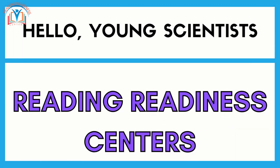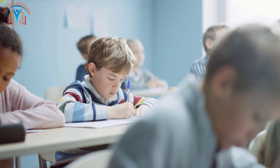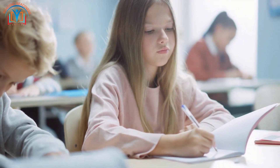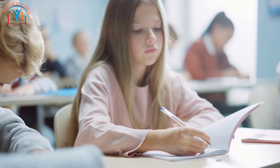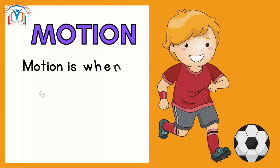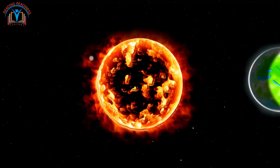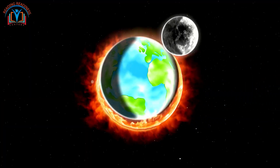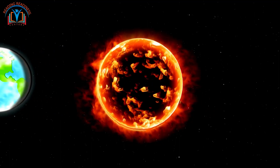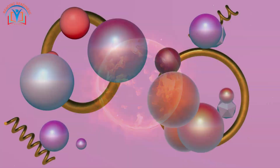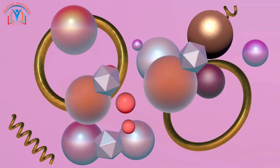Hello young scientists, welcome back to Reading Redness Centers, where learning is an adventure. Today we are diving into an exciting topic: motion and its types. So put on your thinking caps and let's get started! Motion is when something changes its position. Everything in the universe is in motion, even if you can't see it. The earth is moving around the sun, the moon is moving around the earth, and even the air around us is moving. It's when things move from one place to another.